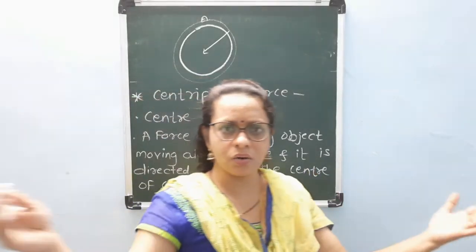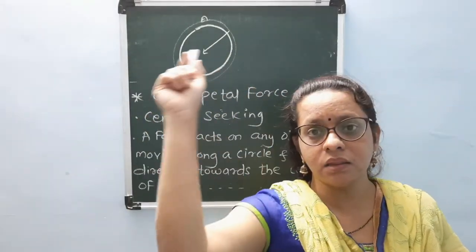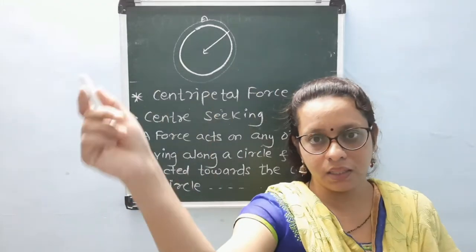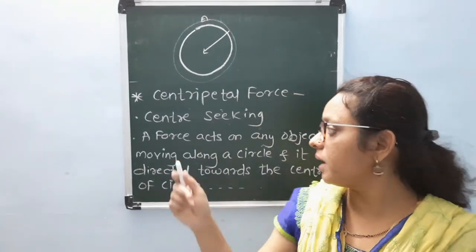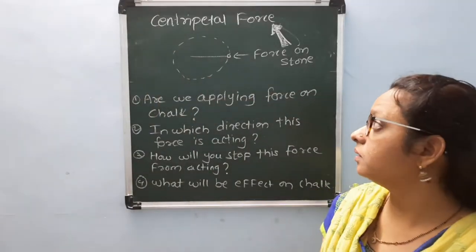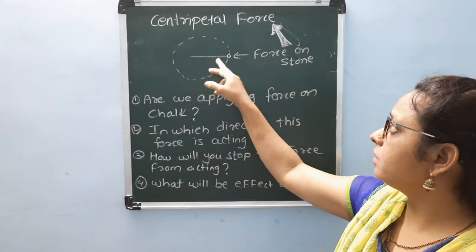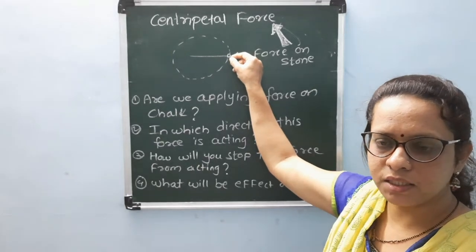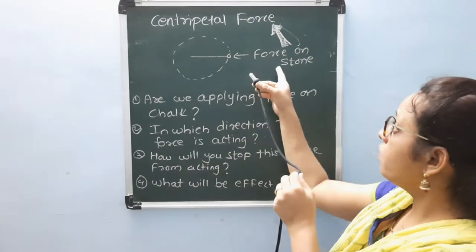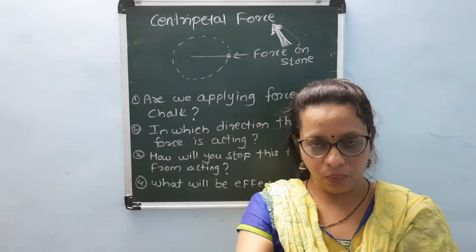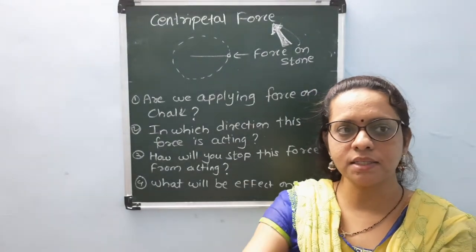Suppose you take a long string or thread and tie a stone to one end of that thread, then move that thread in a circular motion with your hand. The force acting on that stone — as you move your hand in circular motion — whatever force is acting on that string and on that stone, that is called the centripetal force. Now, let me take an example to explain centripetal force. I am taking a thread and tying a chalk to one end. Whenever I move this thread in a circular motion, whatever force is acting on this chalk is called the centripetal force.